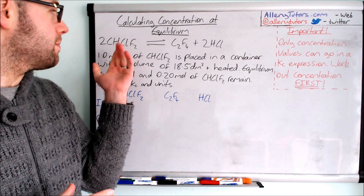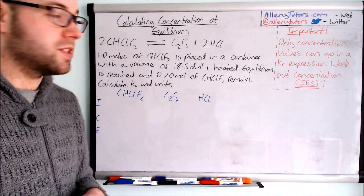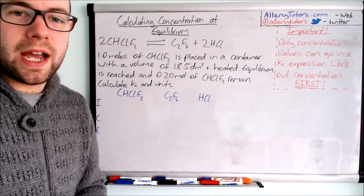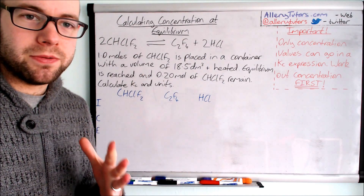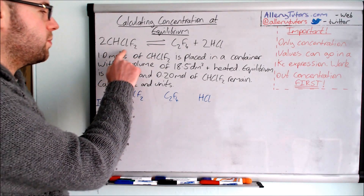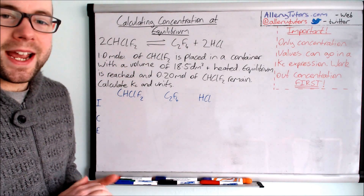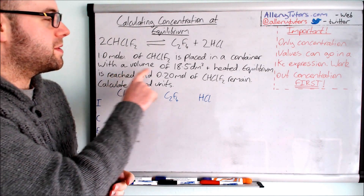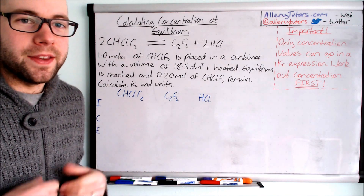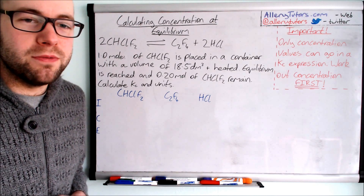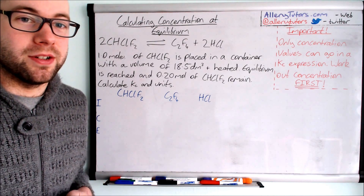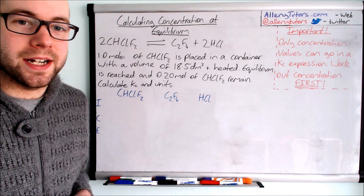In this example we've got two CHClF₂ — a haloalkane — producing C₂F₄ and 2HCl. The question states: one mole of CHClF₂ is placed in a container with a volume of 18.5 dm³ and is heated. Equilibrium is reached and 0.2 moles of CHClF₂ remain. What we need to do is calculate Kc and its units.